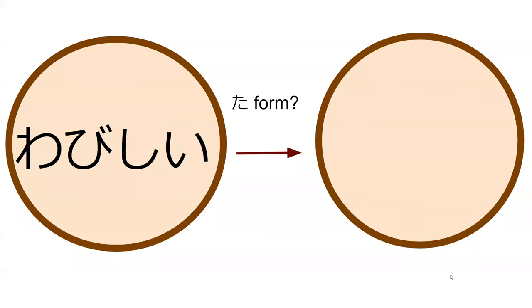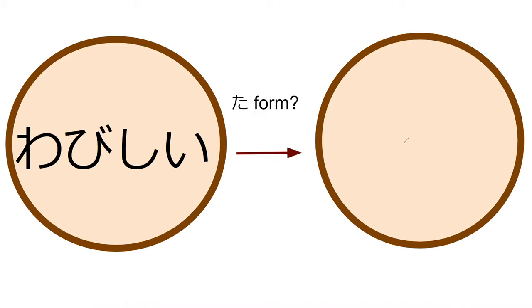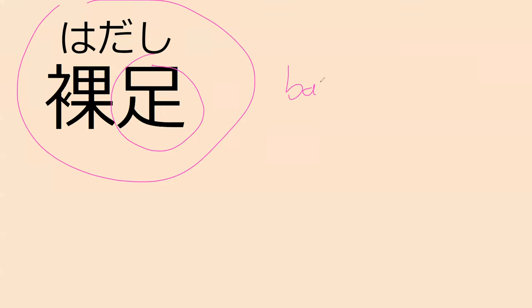Do you remember how to make the ta-form from an i-adjective like wabishi, which meant wretched? It's wabishikatta. Can you read this word for me? Hadashi — hadashi has a kanji for ashi in it, and this means barefoot.